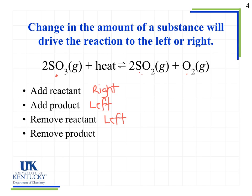A similar thing happens if we remove a product. If we remove SO2, the reaction is going to proceed to the right in order to compensate for that disturbance and reform some of the missing SO2. As a result, the amount of SO3 will decrease, the amount of SO2 will increase back toward what it originally was, and the amount of O2 will also increase — because any time an SO3 molecule decomposes, it must form SO2 and O2.